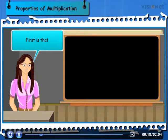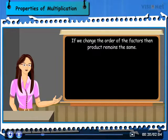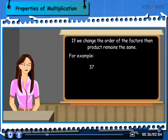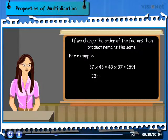First is that if we change the order of the factors, then product remains the same. For example, 37 × 43 is equal to 43 × 37 is equal to 1591. 23 × 31 is equal to 31 × 23 is equal to 713.